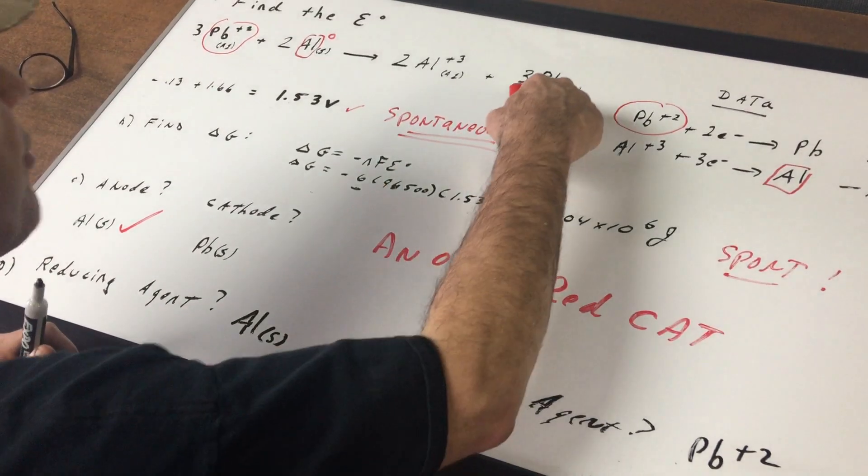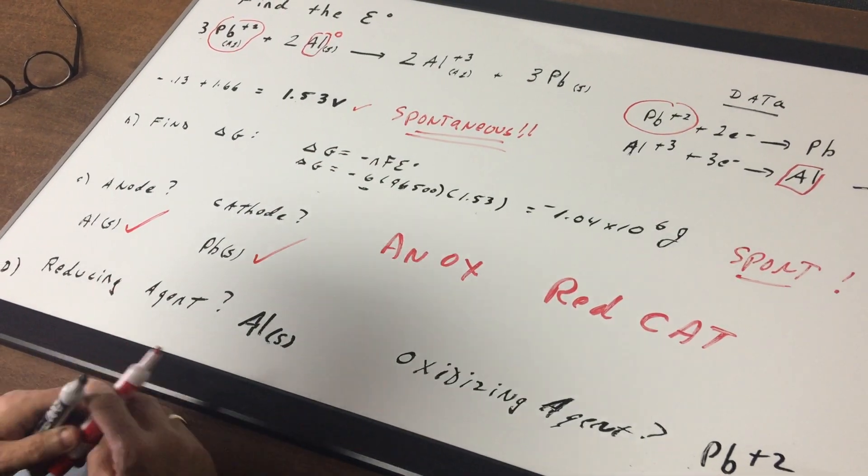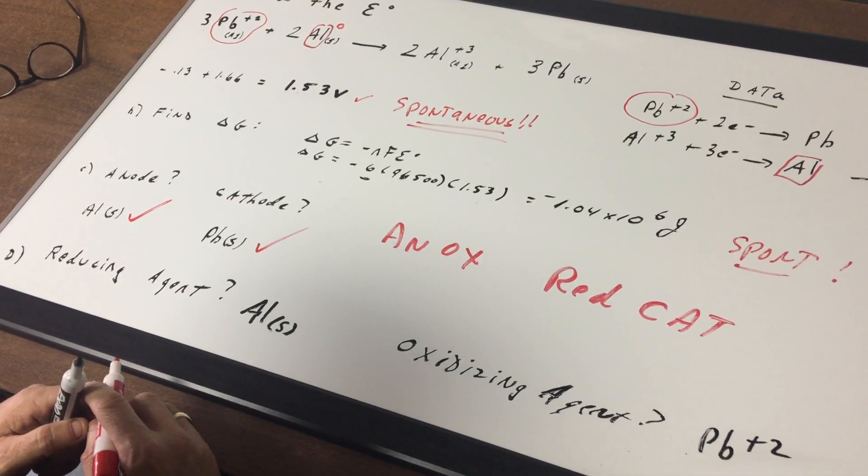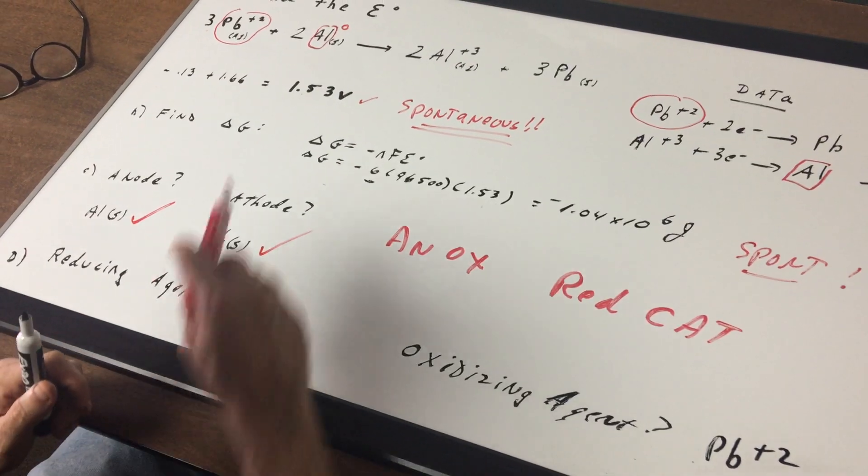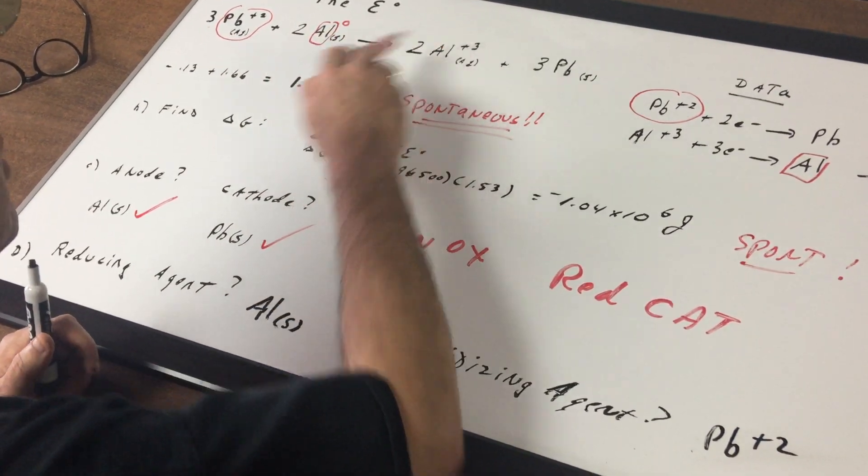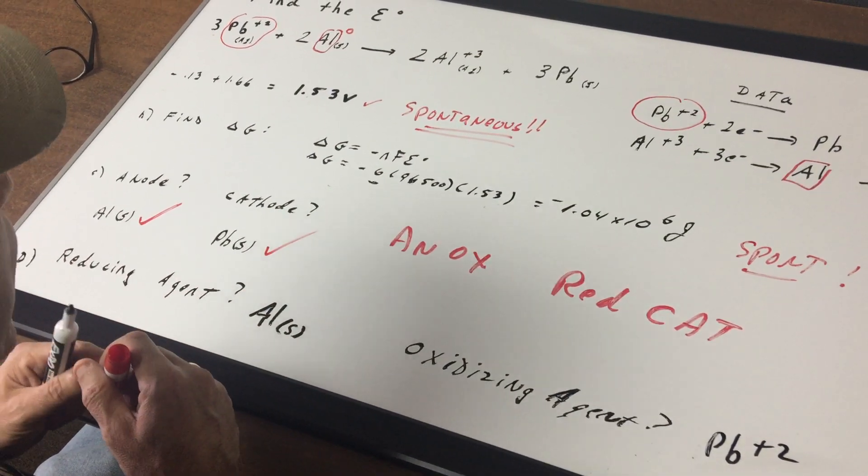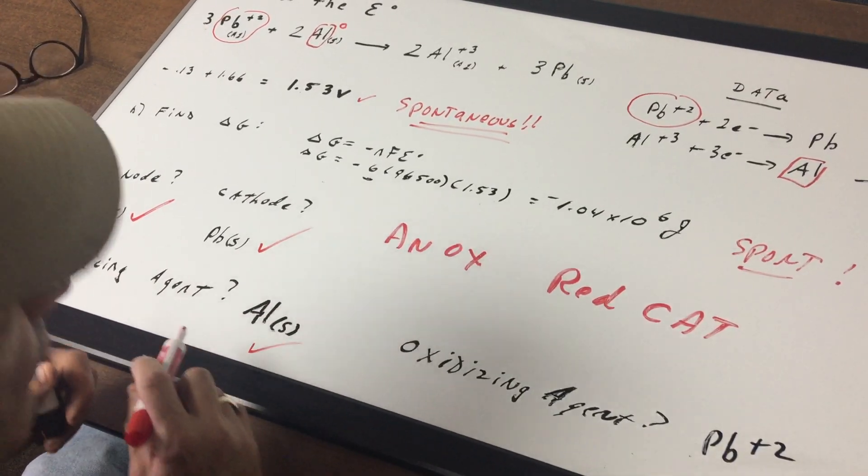Finally letter D, what's the reducing agent? The reducing agent is the substance undergoing oxidation and I'm hoping you can see that aluminum goes from a zero to a plus three. Aluminum zero, or just aluminum, is being oxidized. If it's oxidized, it's the reducing agent.